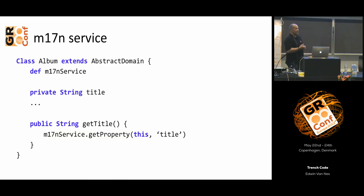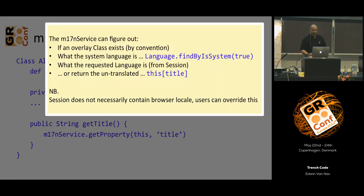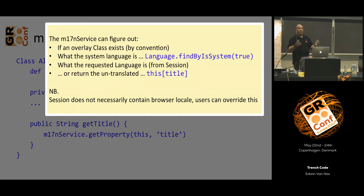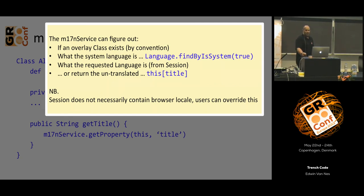This comes from the abstract domain. If you want a title, we have a getter for the title that calls a service which tries to figure out which kind of title to serve. The abstract domain goes to the service and asks, do you have a translation for title? It can figure out if an overlay exists — is there an M17N table for this domain? What is the system language, which we cache for performance reasons? What is the requested language? We take it from the session. The user can manually choose which language they use — the language of their browser is just the default and the user can override it. If no translation is available, we give back the original language, the untranslated record.